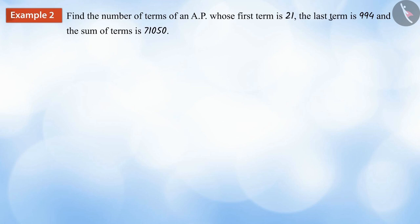Let's look at another example. Find the number of terms of an arithmetic progression whose first term is 21 and the last term is 994 and the sum of terms is 71,050.